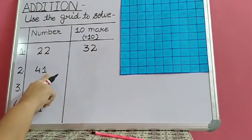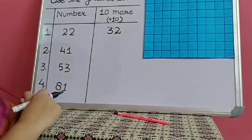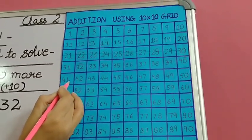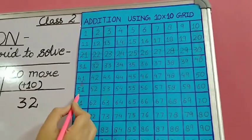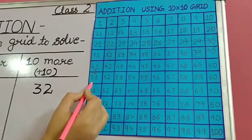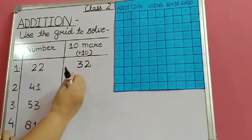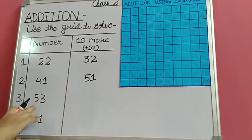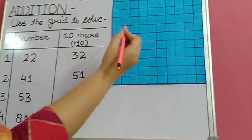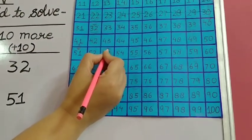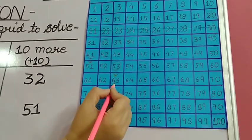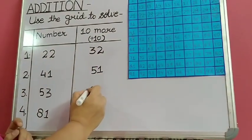The next number is 41. Moving to the grid, we will find number 41 and move 1 row below. We reached 51, so the answer is 51. The next number is 53. From 53, we will move 1 row below and reach 63. The answer is 63.